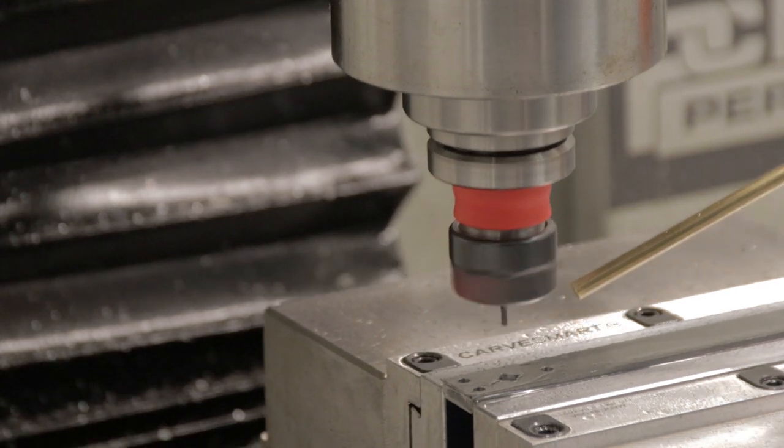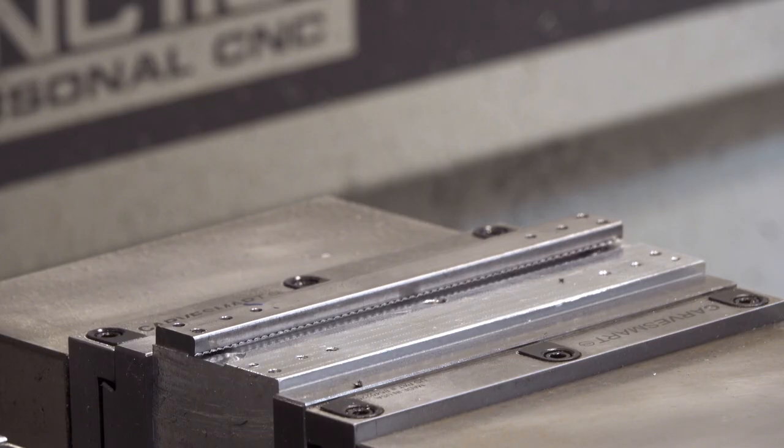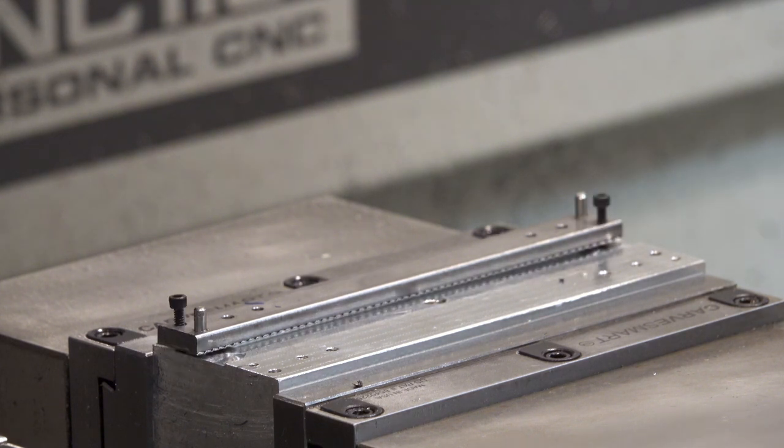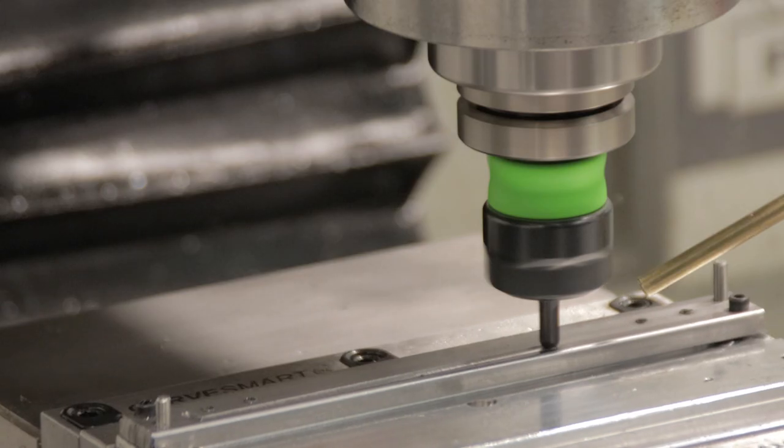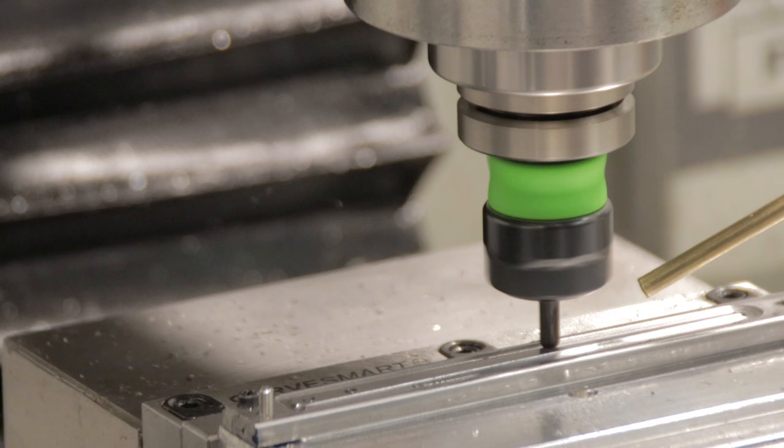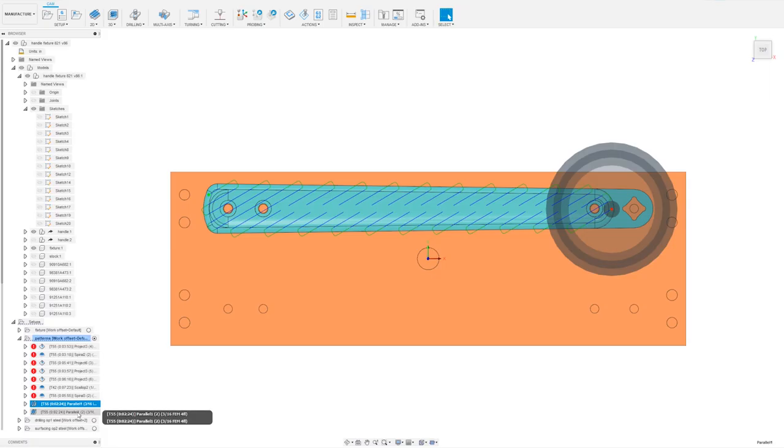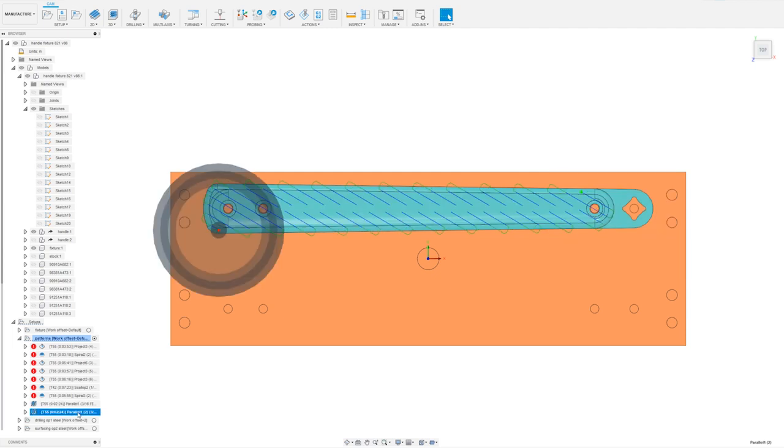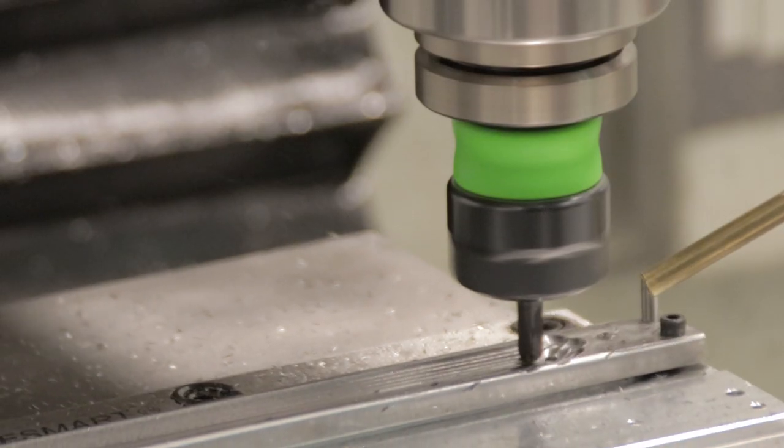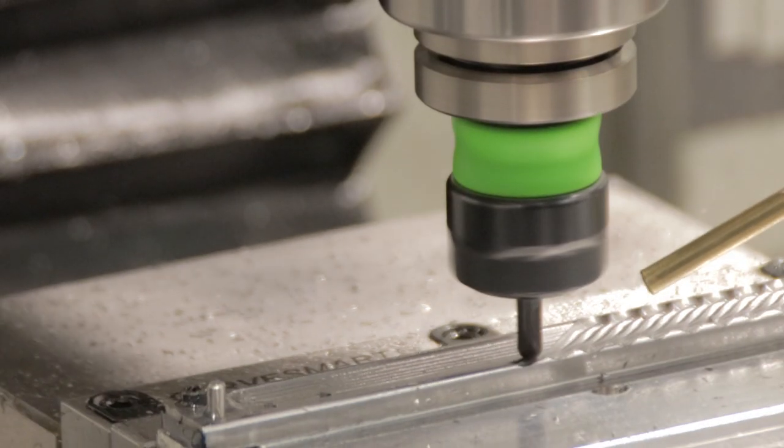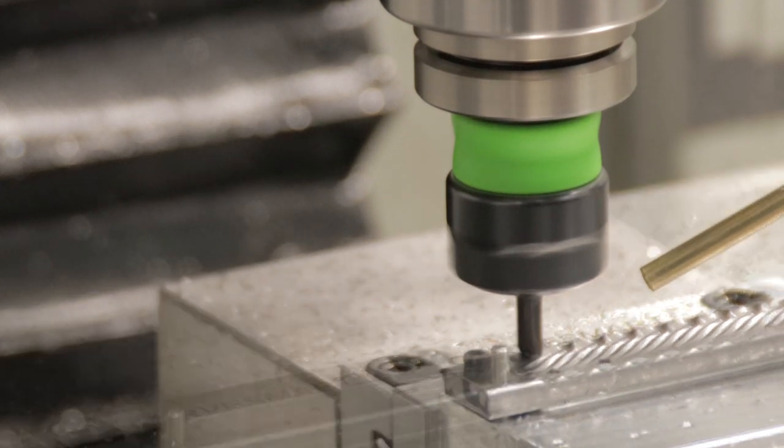Once all the features are machined, the part can be aligned to the fixture with dowels and screwed down. Then I can machine the surface features of the part. I added a couple parallel toolpaths going at 30 degrees and negative 30 degrees, creating a diamond pattern. I've wanted to try making textures like this for a long time.